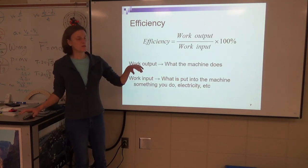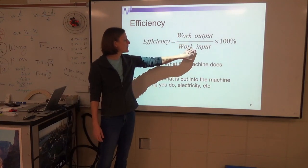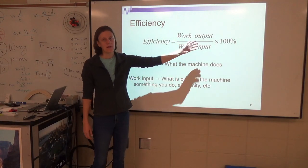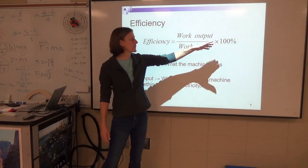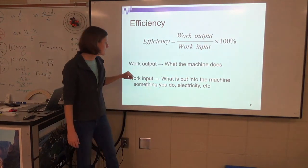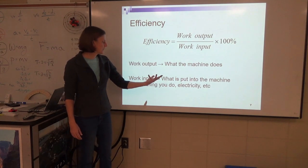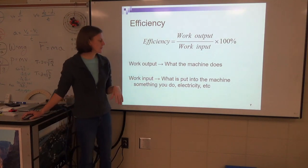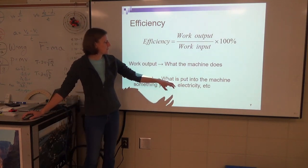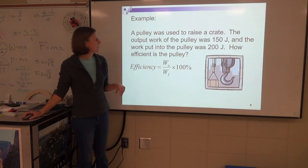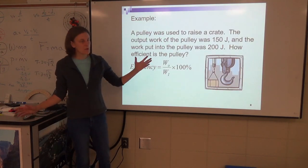Your efficiency formula is work output divided by work input, then times 100% to make it a percent. Work output is what the machine does. Work input is what was put in—it could be something you were doing, or some kind of electrical work or electrical energy.